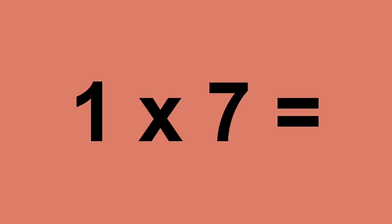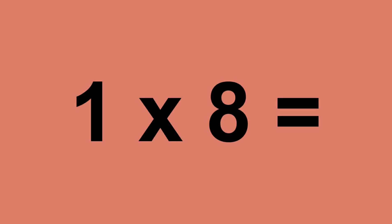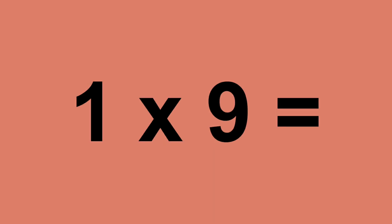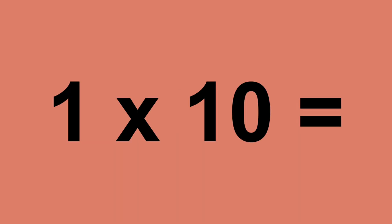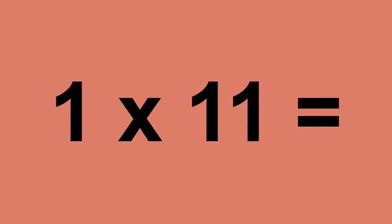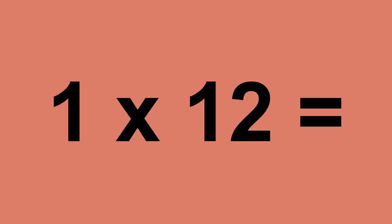One times five equals five. One times six equals six. One times seven equals seven. One times eight equals eight. One times nine equals nine. One times ten equals ten. One times eleven equals eleven. One times twelve equals twelve.